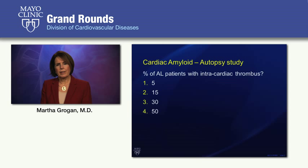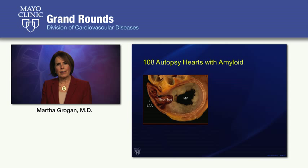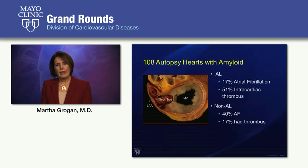In a Mayo study of 108 patients with autopsy hearts, 51% of patients with AL amyloid had intracardiac thrombus even though only 17% were in atrial fibrillation. A very large thrombus in the left atrial appendage extending into the left atrium was found. In senile and familial types, thrombus was less common at 17%, even though they had a higher burden of atrial fibrillation.